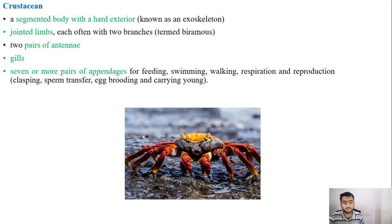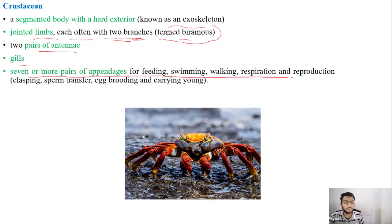A crustacean has a hard exoskeleton, jointed limbs each with two branches (termed biramous), two pairs of antennae, and gills to breathe. It has seven or more pairs of appendages that serve many vital purposes: feeding, swimming, walking, respiration, reproduction, clasping, sperm transfer, egg brooding, and carrying young. The appendages are therefore the most important structural feature of crustaceans.